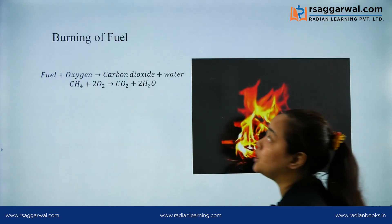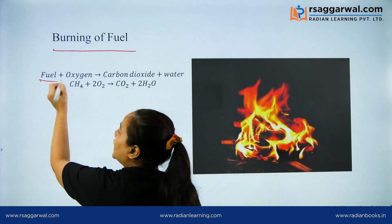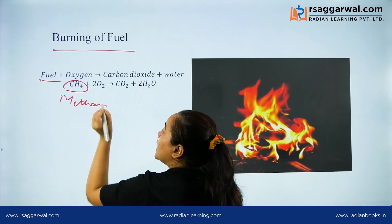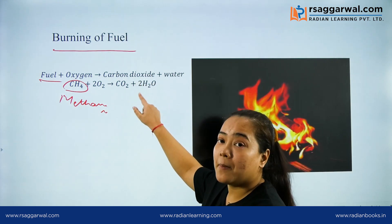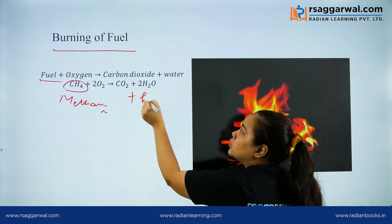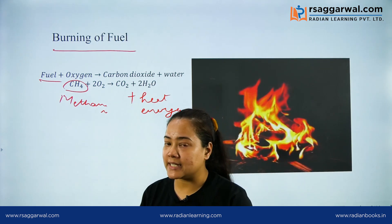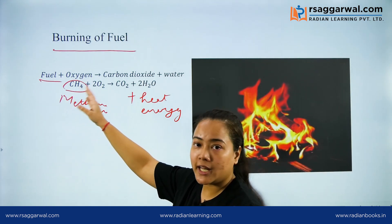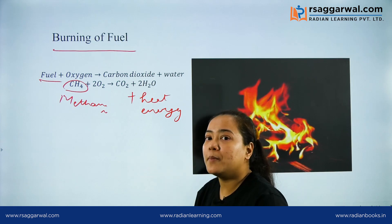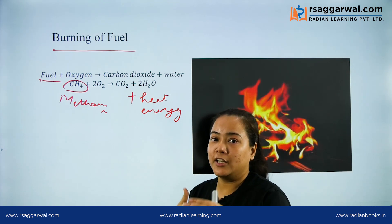Now let's discuss another example: burning of fuel. If we take CH4, which is methane, methane will react with oxygen to form carbon dioxide and water and a lot of heat energy. Obviously when we burn a fuel, a lot of heat energy will be released. In this example, different chemical compounds — methane and oxygen — are reacting to form different chemical compounds — carbon dioxide and water — and also liberating a large amount of heat to the atmosphere. So this is also a chemical process.